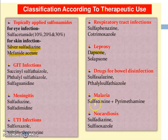Malaria: sulfadoxine and pyrimethamine. Nocardiosis: sulfadiazine and sulfisoxazole.